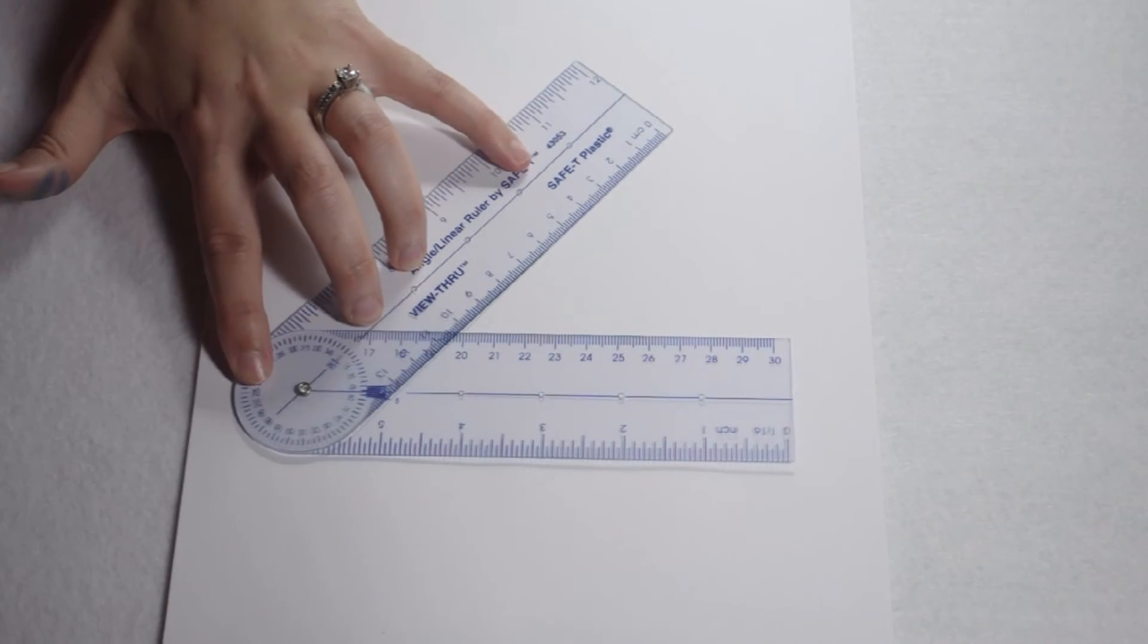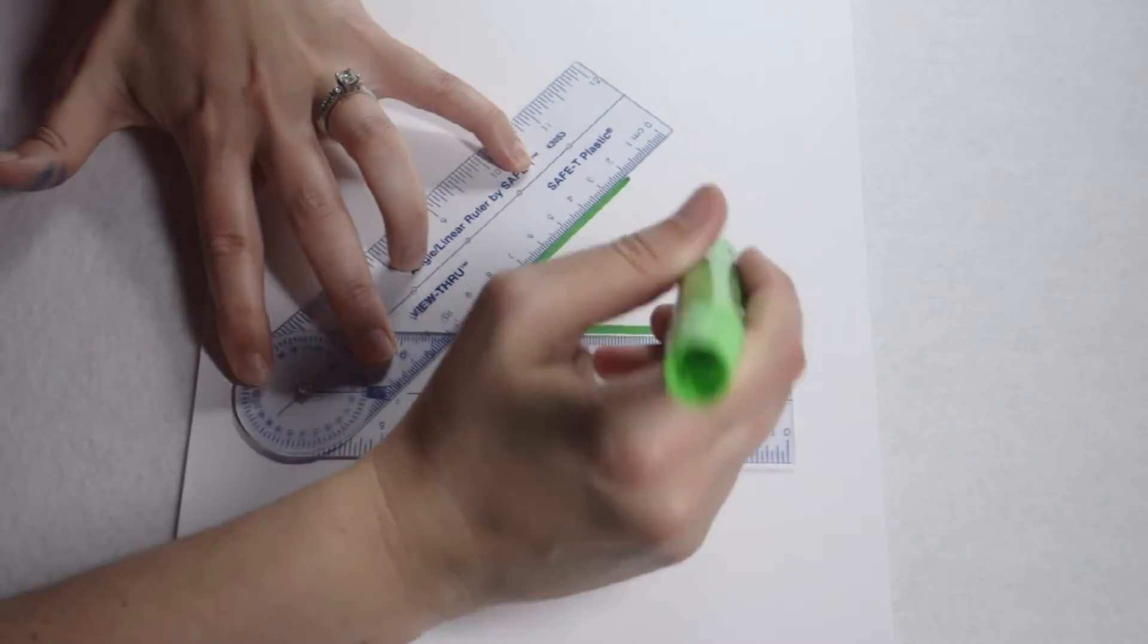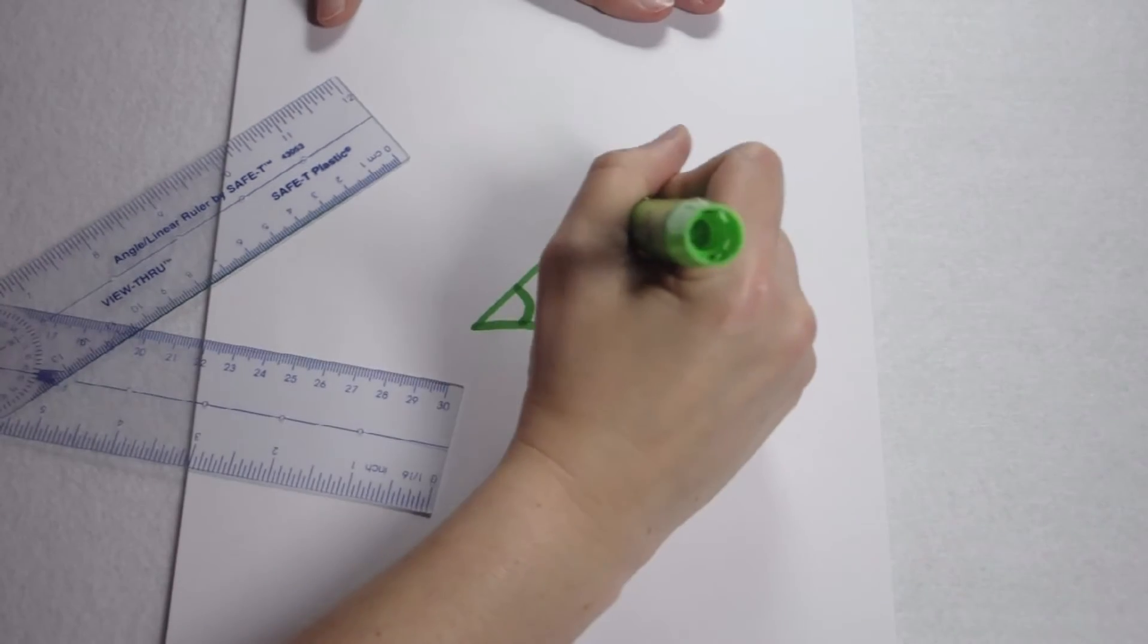Now that I have my angle ruler set at 50 degrees, I can simply trace the inside of my angle and label it to show I measured the acute angle of 50 degrees.